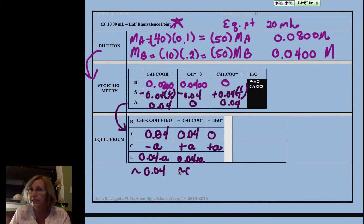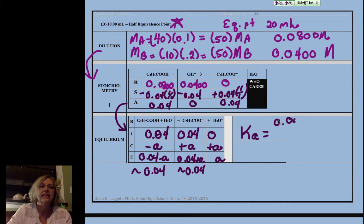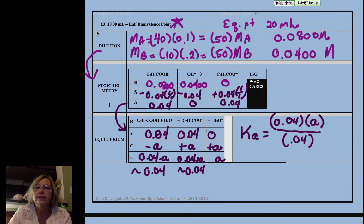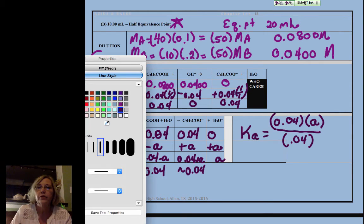Now if you have the Ka expression already in your notes, I'm not going to write that again, as long as you've written it once you'll be okay. So I have my propanoate which is 0.04 molar, I have my H3O plus which is a, over my propanoic acid.